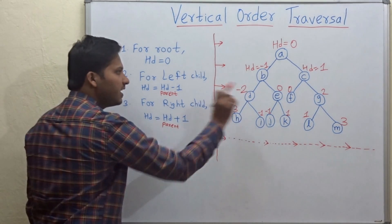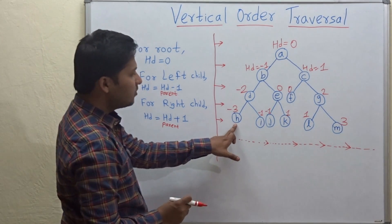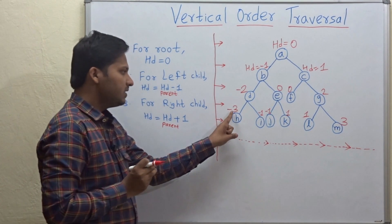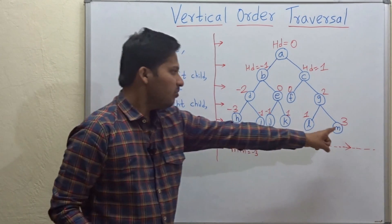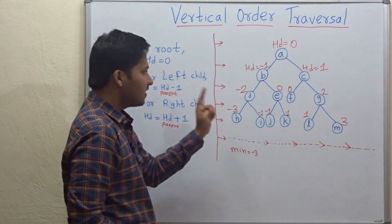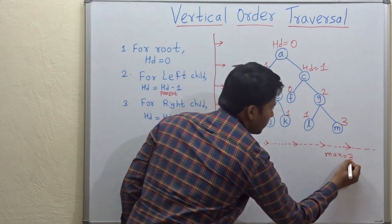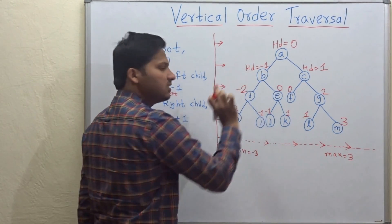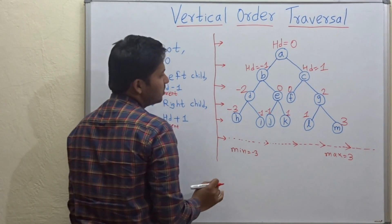In this way, we have assigned the horizontal distances to every node. Node h has the minimum distance of minus 3, and node m has the maximum distance of 3. Now, nodes with the same horizontal distances come in the same vertical line. Let's note down the vertical lines.